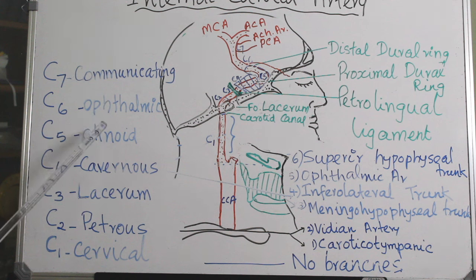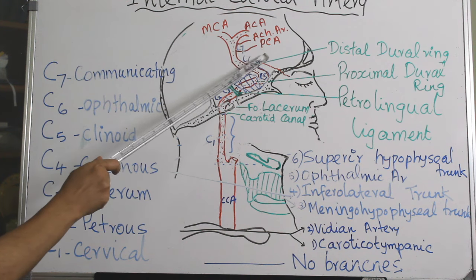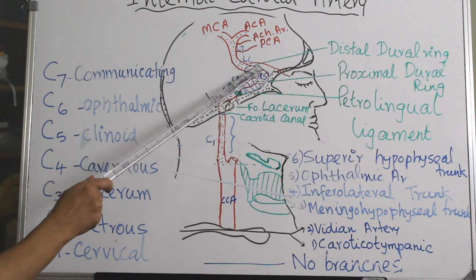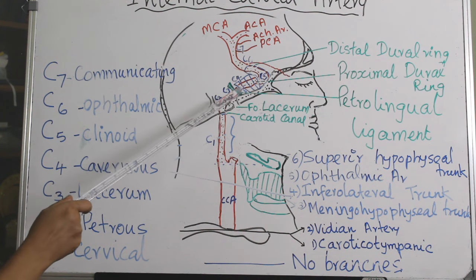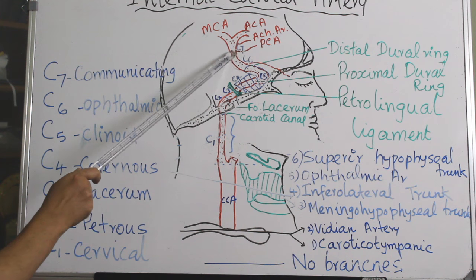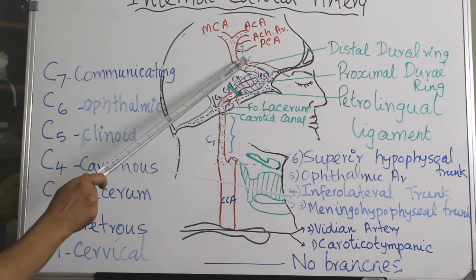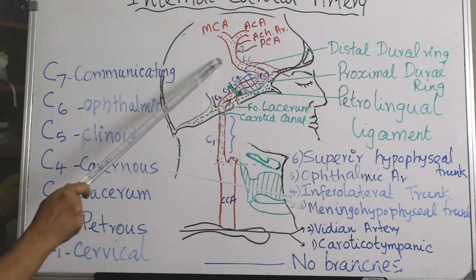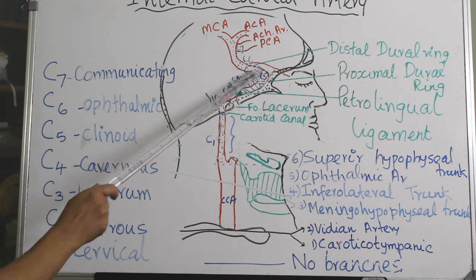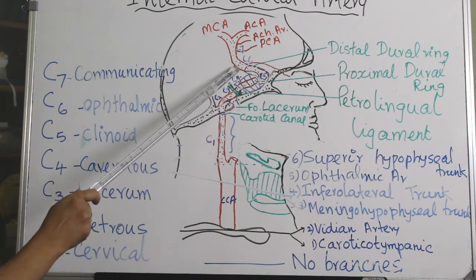C6 is the ophthalmic segment, from the roof of the cavernous sinus, or distal dural ring, up to the proximal origin of the posterior communicating artery. You can see the posterior communicating artery arising here. Branches of the ophthalmic segment include the ophthalmic artery and the superior hypophyseal trunk.